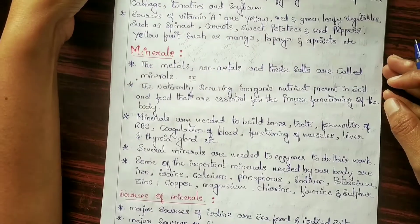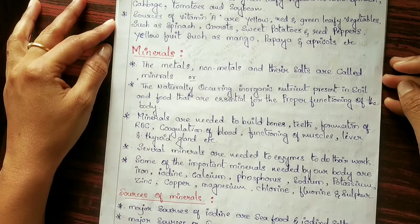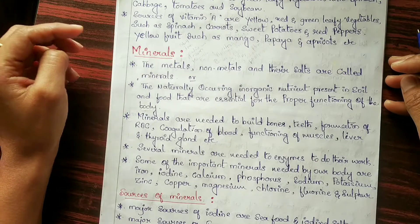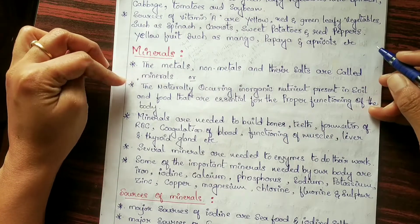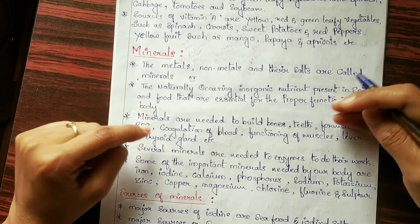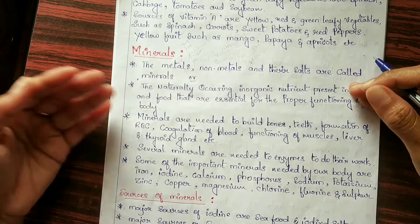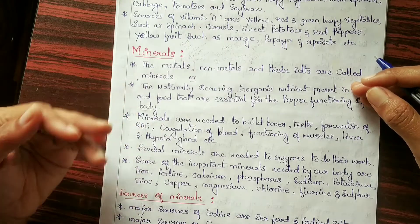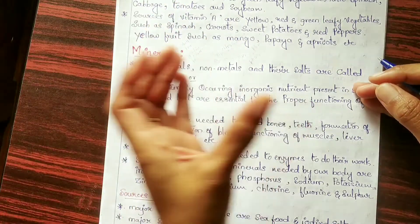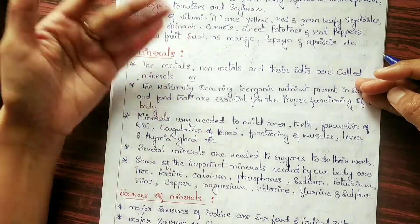Now we will move on to the next component of food — minerals. Minerals are metals, non-metals and salts, or more precisely, naturally occurring inorganic nutrients present in soil and food that are essential for the proper functioning of the body. Minerals are needed to build bones and teeth, for the formation of red blood cells, coagulation of the blood, and functioning of the muscles, liver, and thyroid gland.